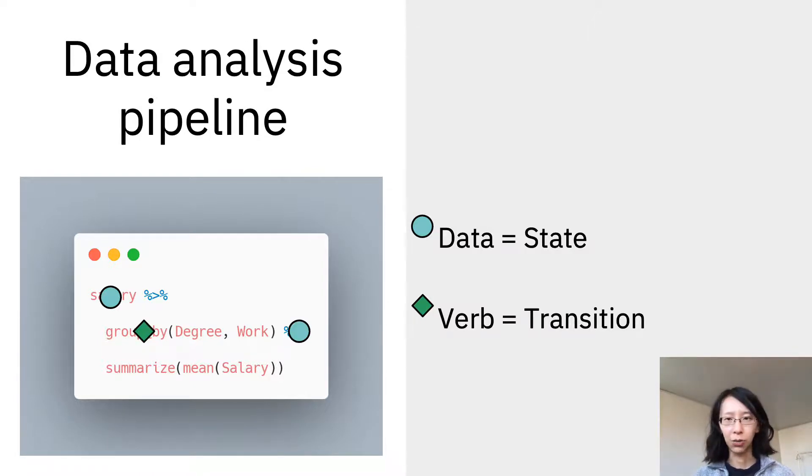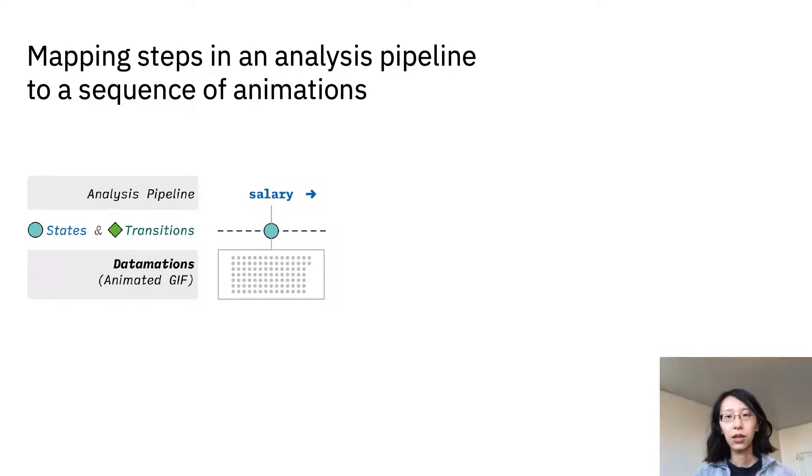And then it just alternates between the data variable and the verb. We can think of those data variables as states and the data operation verbs as the transitions between states. So for a given data analysis pipeline, Datamations map each data variable to a static plot and data operation verbs as animated transitions.